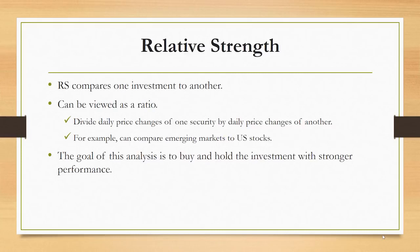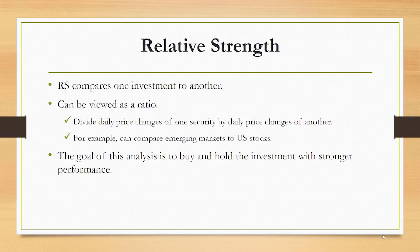Relative strength compares one investment to another, and it's looking for which one is performing stronger. We can view this as a ratio. For example, we can take the historical daily price changes of one security and divide those price changes day by day to develop a ratio going back in time. This allows us to compare, for example, emerging stocks to US stocks. The goal of that analysis would be to identify the stronger and to hold it until it becomes weaker.